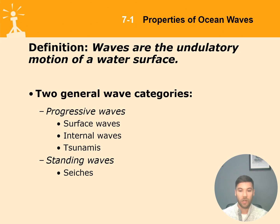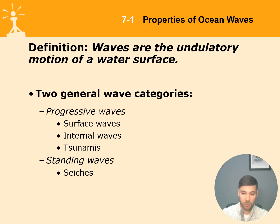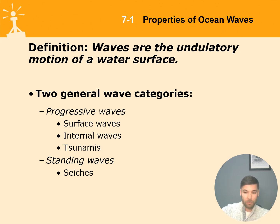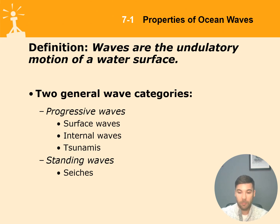In science, waves are defined as undulatory motion of the water surface. There are two main wave categories: progressive waves and standing waves. Most commonly at sea we see progressive waves — surface waves we see all the time when we sail. There are also internal waves occurring at the pycnocline at around 100–200 meters depth, and seiches, which are most commonly observed in bays, lakes, and closed or partly closed water reservoirs.